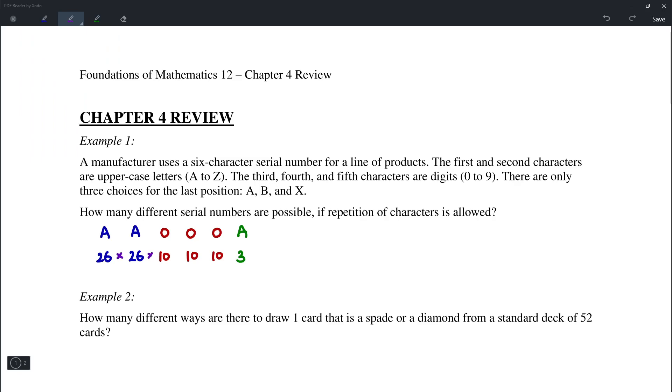So using the fundamental counting principle, we simply have to multiply these numbers together to get the total number of possible serial numbers. And the result is 2,028,000 possible serial numbers.